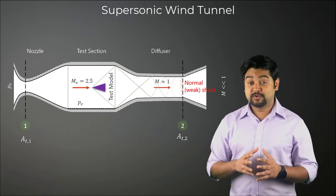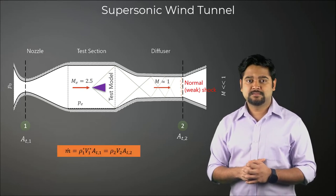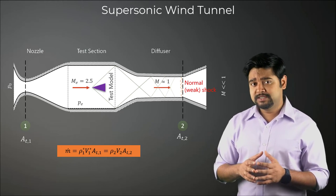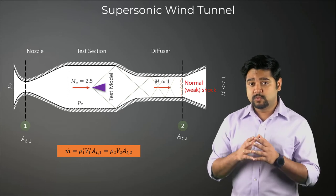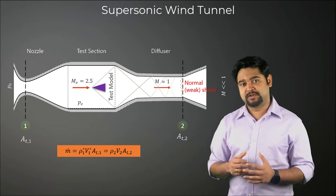For maintaining a steady flow through the wind tunnel, we must ensure the following condition. Since the thermodynamic state of the gas is irreversibly changed when going through shockwaves, the properties at the two locations will differ. And thus, the two throats must have different areas.